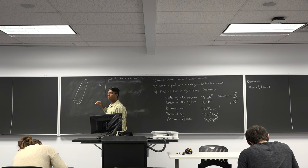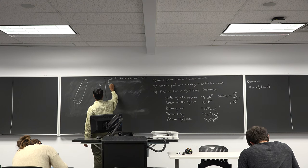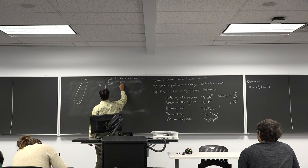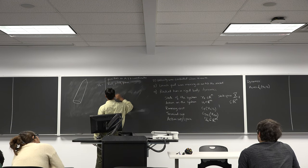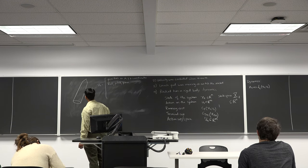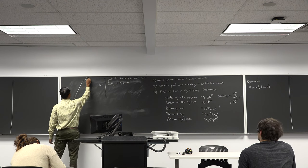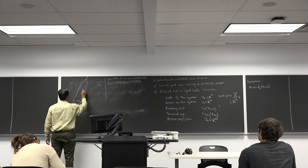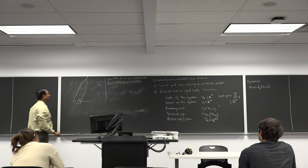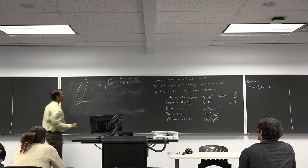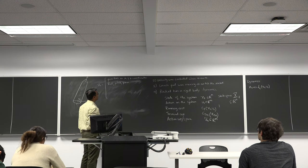Roll, pitch, yaw. So roll, pitch, yaw is basically the angles the rocket makes with different axes. What other thing do I need to know?